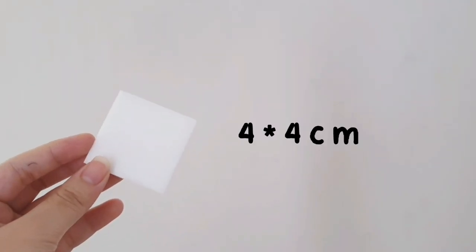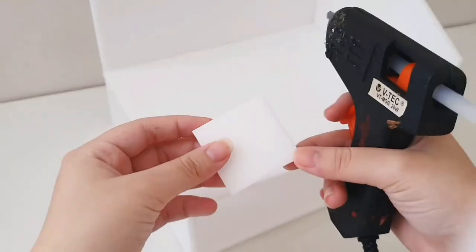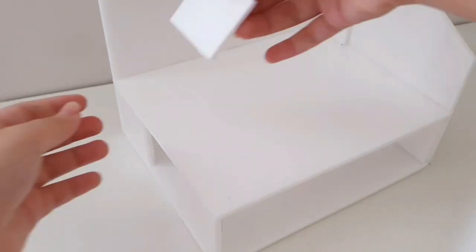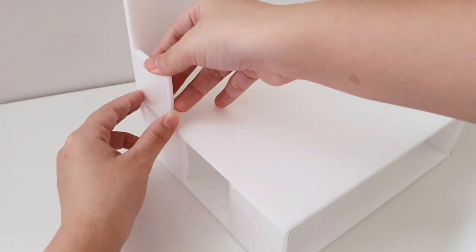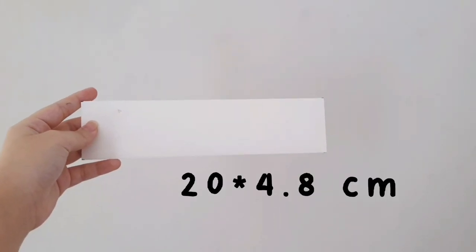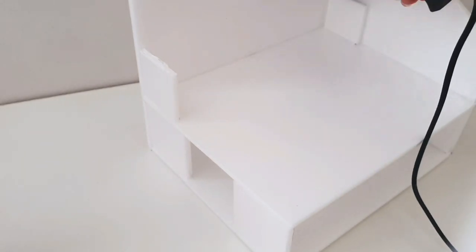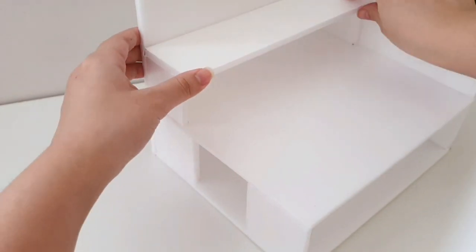Next you want to take the 4x4 cm piece and glue it onto the back corner of the organizer. Then we will use the 20x4.8 cm piece and you just need to glue it above the 4x4 cm piece that you just glued earlier.